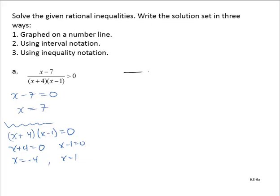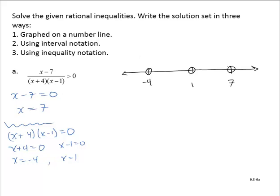We'll put those on our number line. In numerical order: here's negative 4, here's 1, and here's 7. I'm not worried too much about scale, just the basic idea, but they do have to be in numerical order. Since it's a strictly greater than inequality, it can never be equal, so I put an open point on all of these important x values.